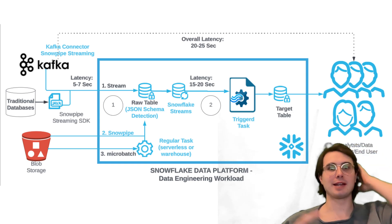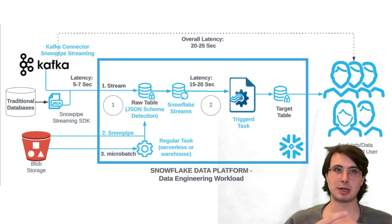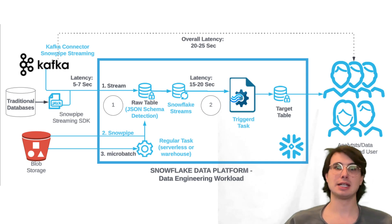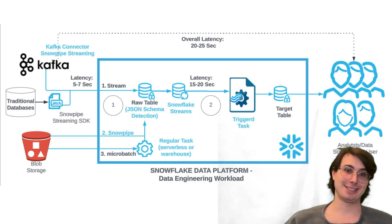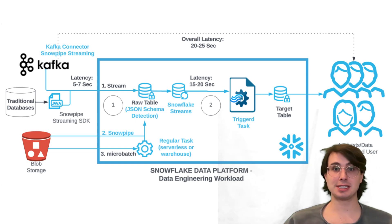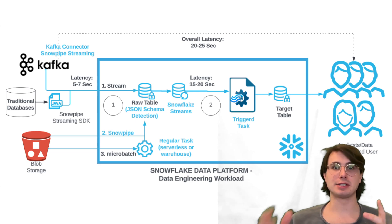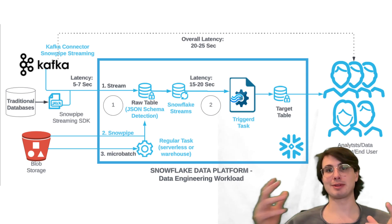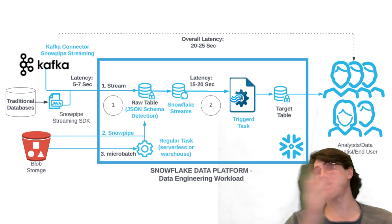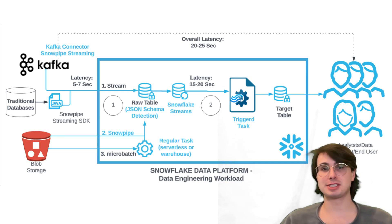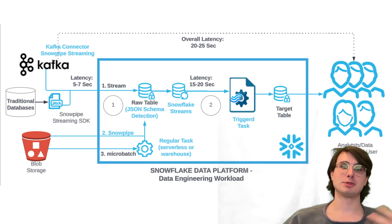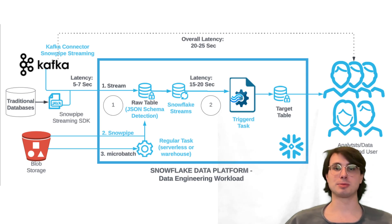The next design principle is to minimize processing latency whenever possible. Keeping processing stateless is a great way to achieve this because stateless transformations scale better. You can use something like AWS Glue, which is almost infinitely scalable to add additional compute and processing power.